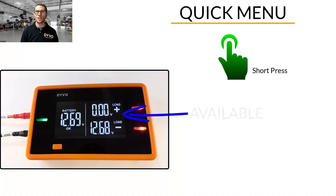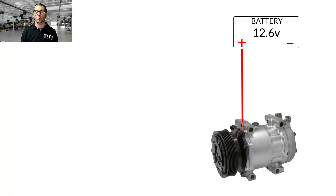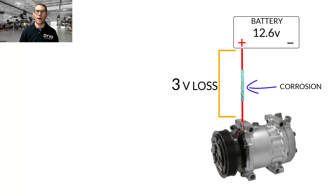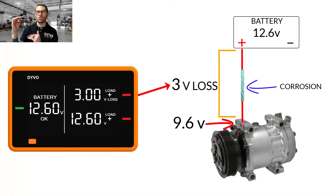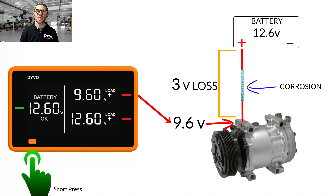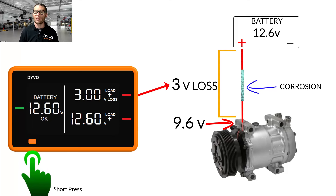To help understand the difference between these two, let's say that you have 12.6 volts at the battery. You have a wire that goes to your AC compressor. The wire has some corrosion in it, so it's losing 3 volts. That means at the AC compressor, you would only have 9.6 volts. The 3 volts that you dropped across the wire is your V loss. The 9.6 volts is your available voltage at the AC compressor. You can cycle between V loss and V anytime you want — it makes no difference on testing and it's personal preference.